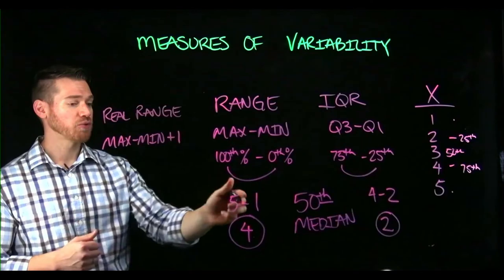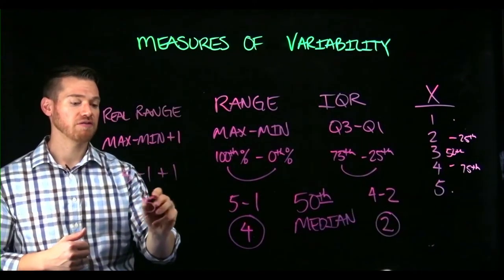And so for this data, the real range would be five minus one plus one, five.